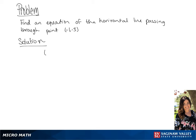We're looking for the equation of the horizontal line passing through point negative 1, negative 3. Since it's a horizontal line, we're looking for the y-intercept, so that would be negative 3. In this case, the equation would be y equals negative 3.